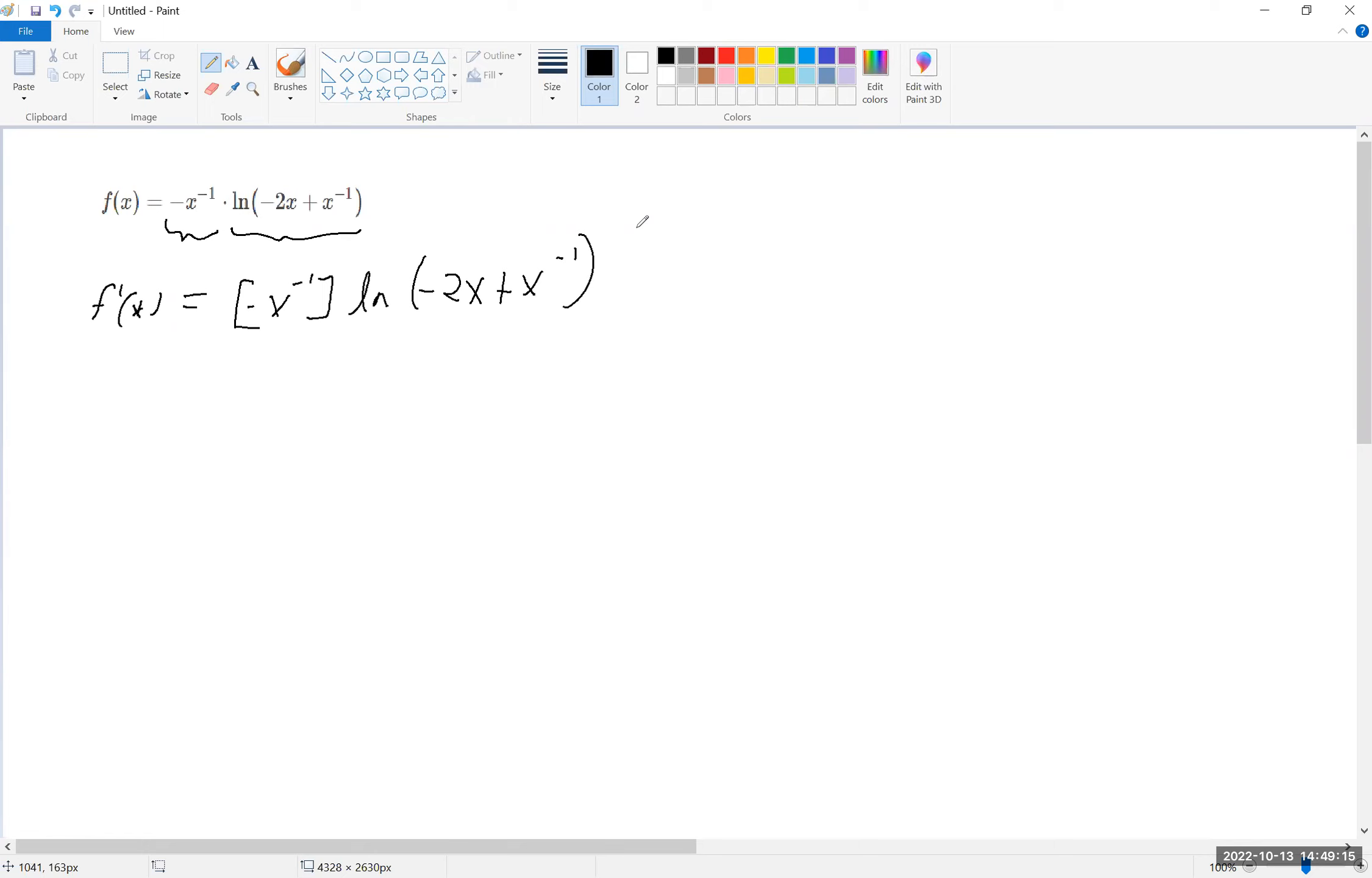Then we take the derivative of the second function, which is natural log of minus 2x plus x to the minus 1. We take the derivative of that and leave the first function alone. We'll put that in parentheses.